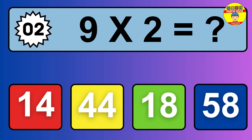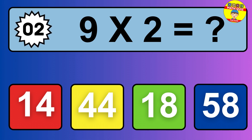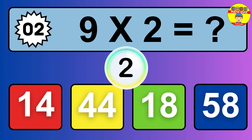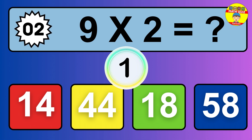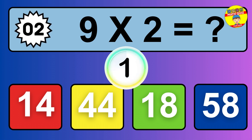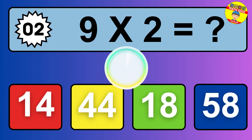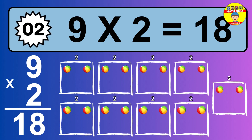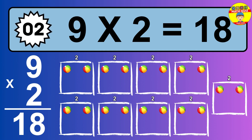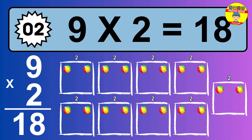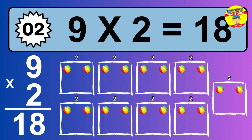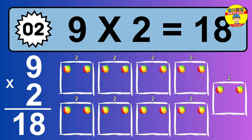Question 2. 9 times 2 equals what? The answer is 9 times 2 is 18. To calculate, we have 9 groups with 2 balls each one. So, how many balls do we have? 18 balls.